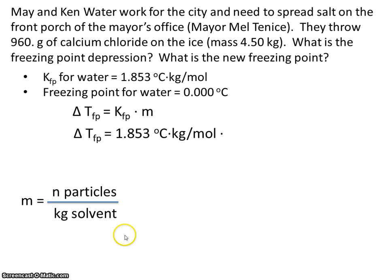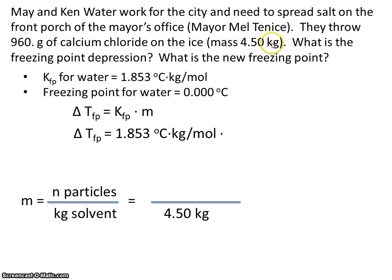So let's plug in what we know. We know that we have 4.5 kilograms of solvent — that's the 4.5 kilograms of ice. The ice is what will be doing the dissolving, so that's the solvent. Now, we don't know how many moles of particles we have. We know how many grams of calcium chloride we have, so we're going to have to convert grams of calcium chloride into moles of particles.